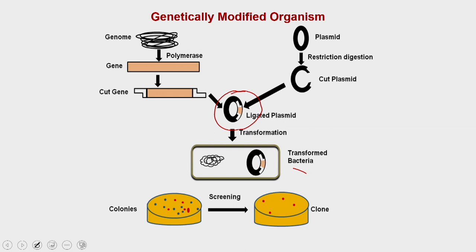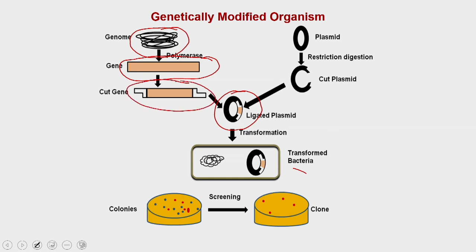For producing this recombinant plasmid, we need the gene from the particular host, which you can isolate either by PCR or from the genomic library or cDNA library. Once you have the gene, you digest it with a particular set of restriction enzymes, and similarly digest the transforming agents with the same restriction enzymes. Then you put these two components together in a ligation reaction and transform that into bacteria to produce the genetically modified organisms.